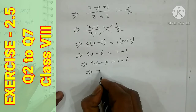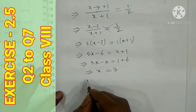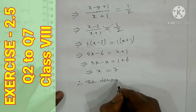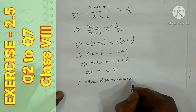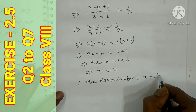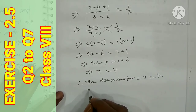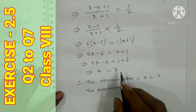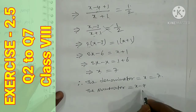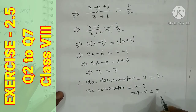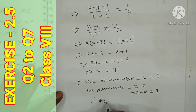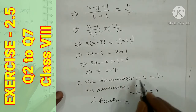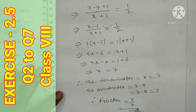So x = 7. Therefore the denominator is 7 and the numerator is x minus 4 = 7 minus 4 = 3. Therefore the fraction is 3/7. This is the answer.